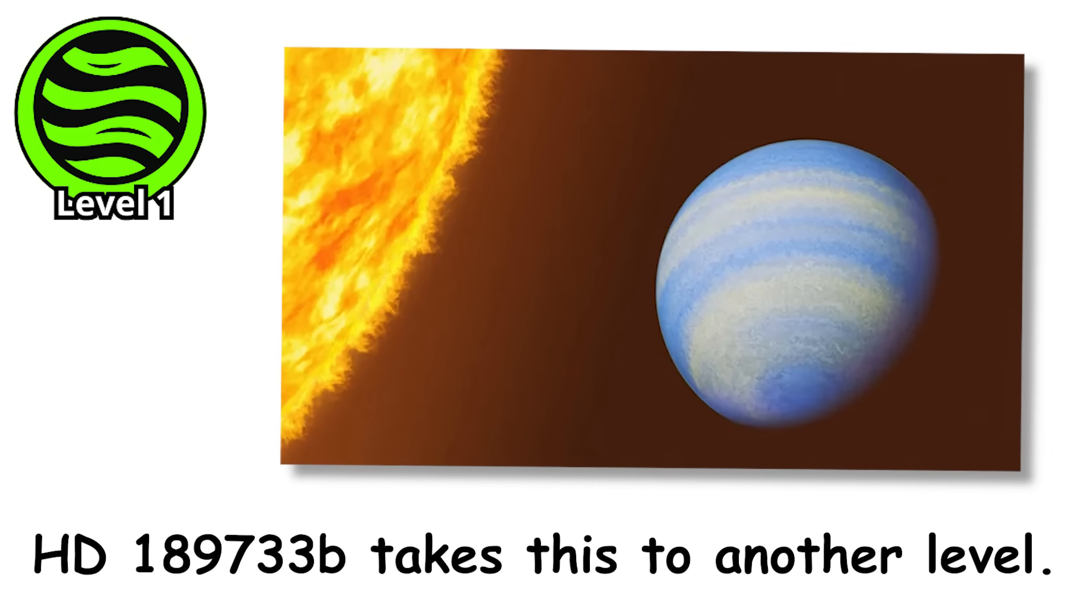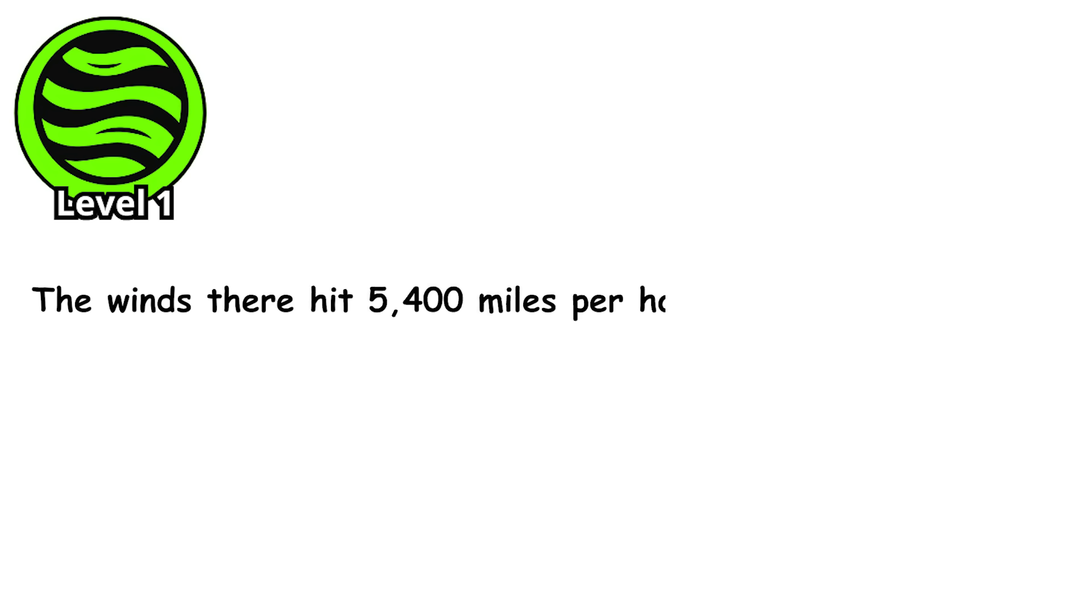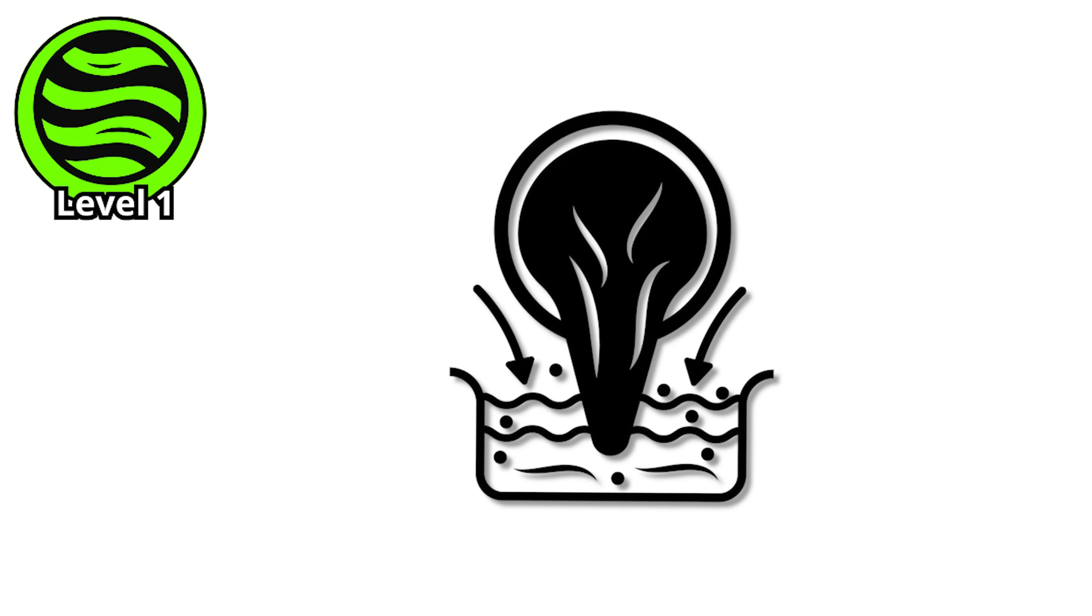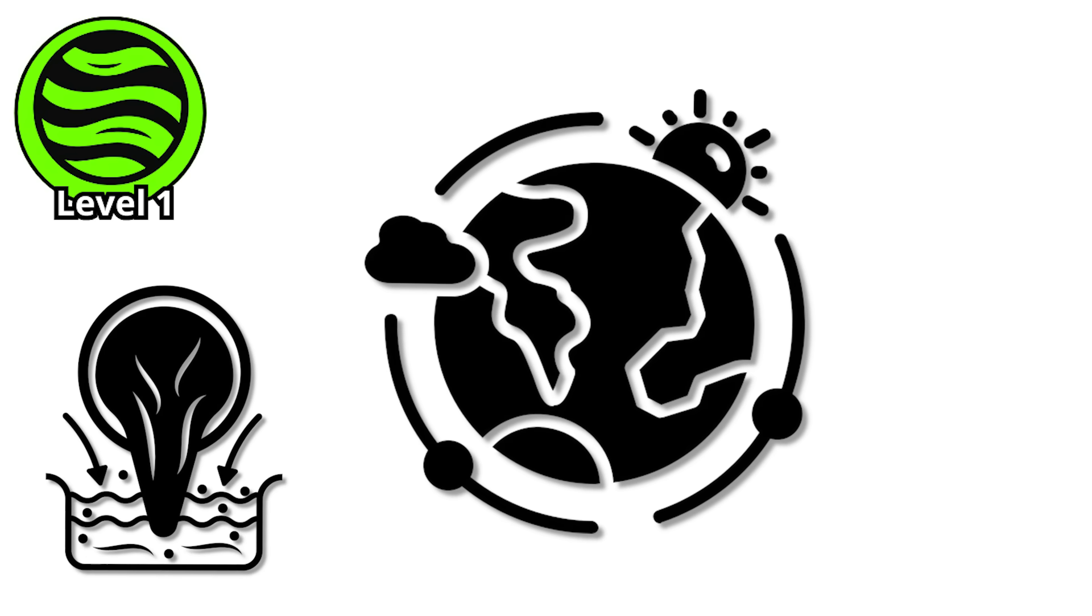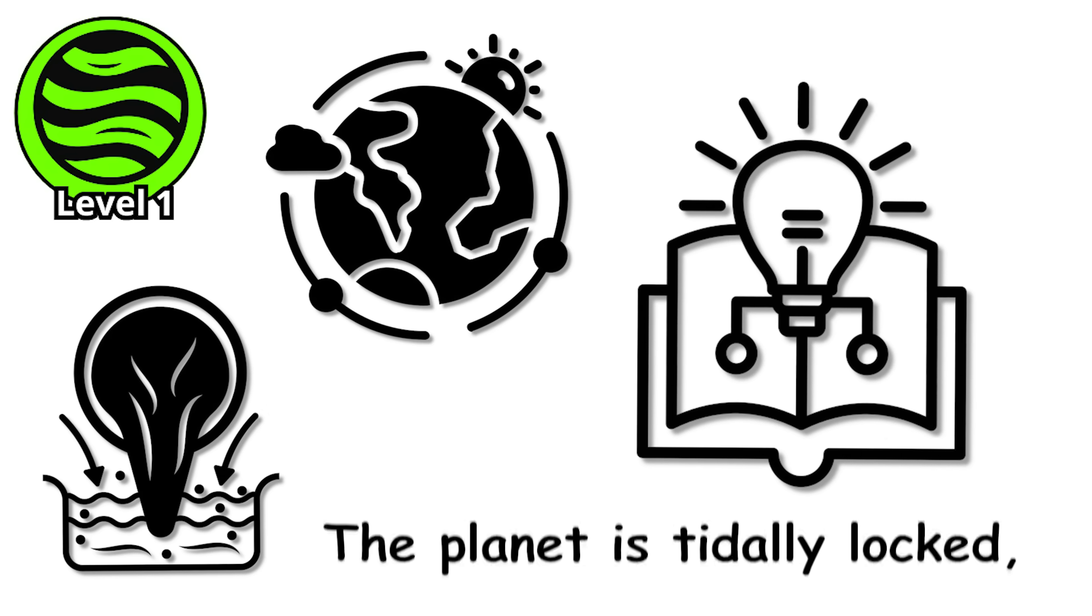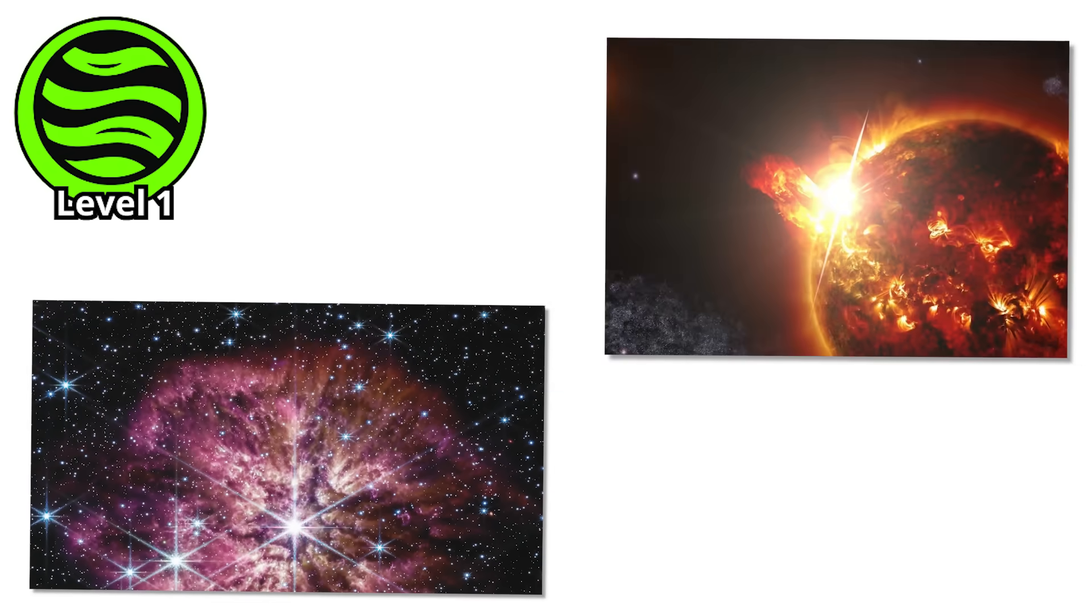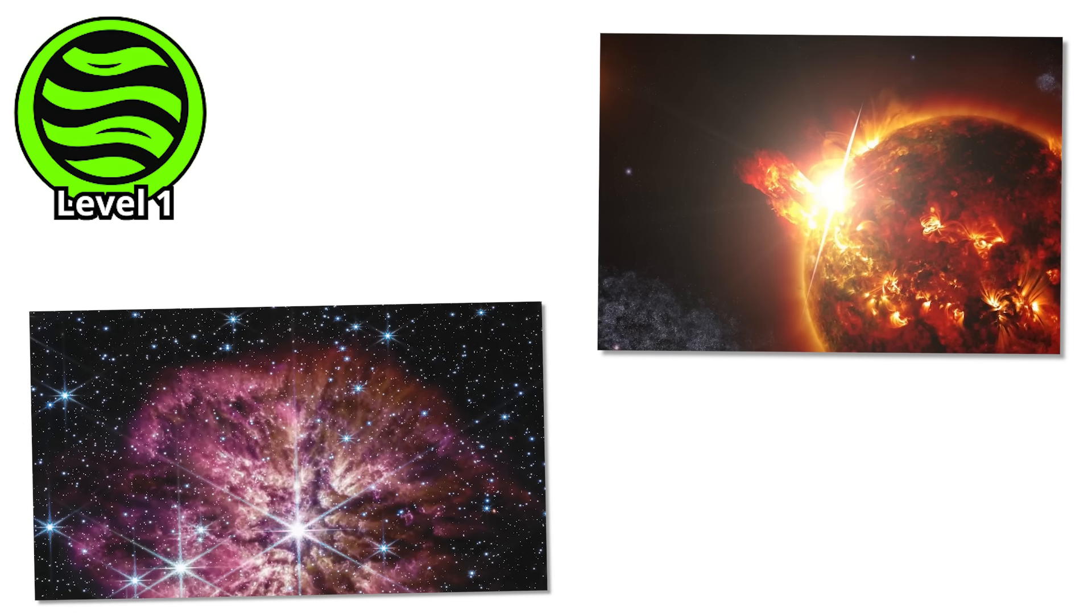HD 189733b takes this to another level. The winds there hit 5,400 miles per hour - that's seven times the speed of sound. And it rains glass, sideways. Molten glass whipping through the atmosphere at hypersonic speeds, shredding anything that could theoretically exist there. The planet is tidally locked, one side permanently facing its star in eternal blazing daylight, while the other side freezes in permanent darkness.